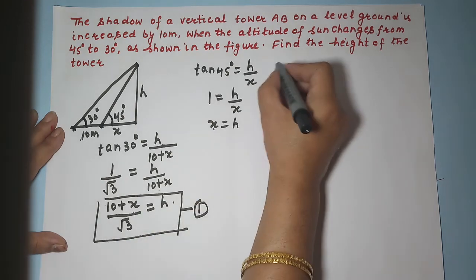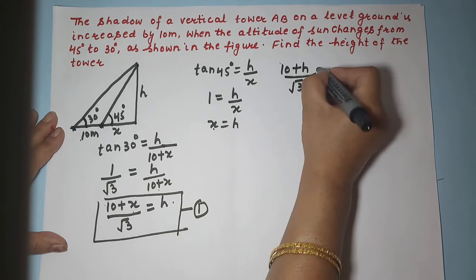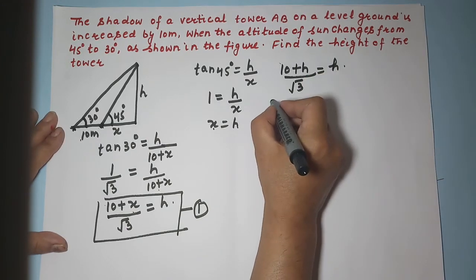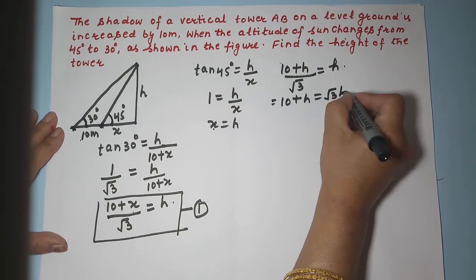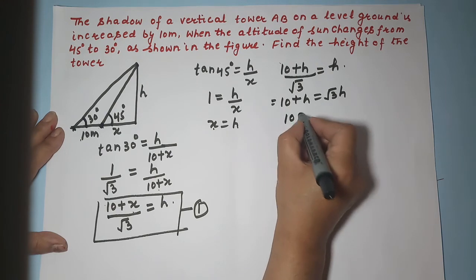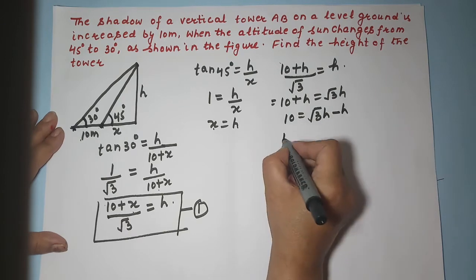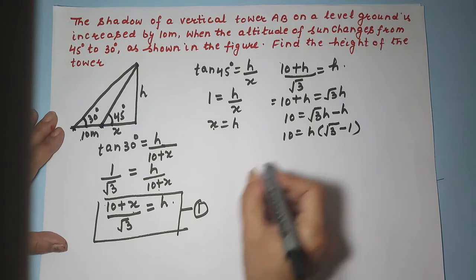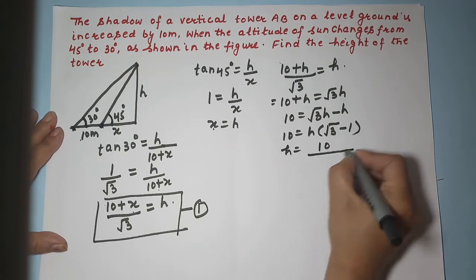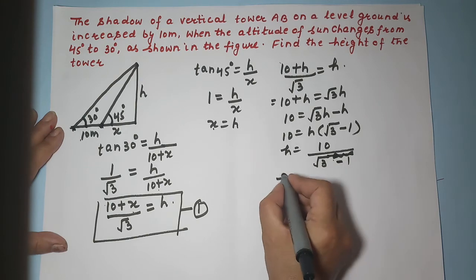Substituting X equals H back into the first equation: 10 plus H upon root 3 equals H. Cross multiplying gives 10 plus H equals root 3 times H. Shifting H to the right: 10 equals root 3 H minus H. Taking H as common, 10 equals H times (root 3 minus 1), so H equals 10 upon (root 3 minus 1).